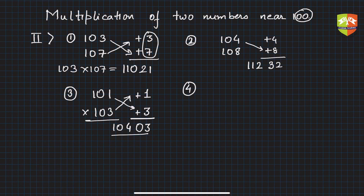Another example: 102 and 104. Plus 2 and plus 4, distance from 100. 2 times 4 is 8, but you have to write 08. Then 102 plus 4 is 106, so the product is 10608.